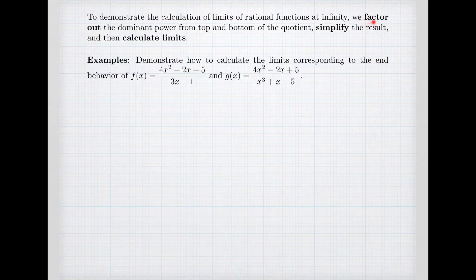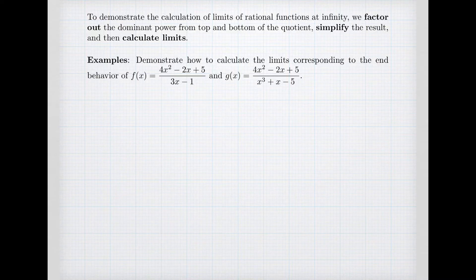The first step is to factor out the dominant power from both the top and the bottom of the quotient. Then we'll simplify that result. And from the simplified version, we can calculate limits. We'll demonstrate this with both of the examples that we looked at previously — we know what the behavior should look like, and we want to calculate the limits more carefully.